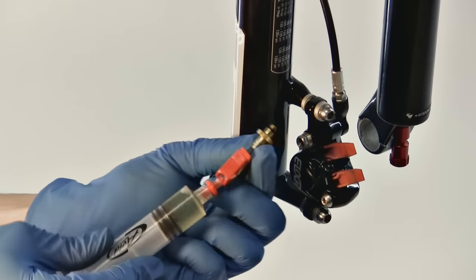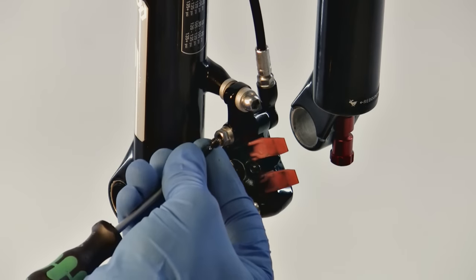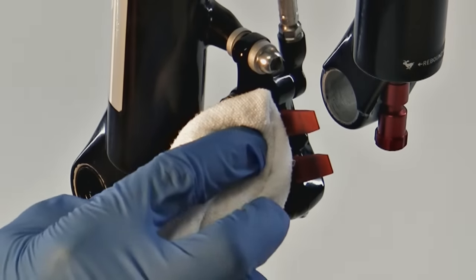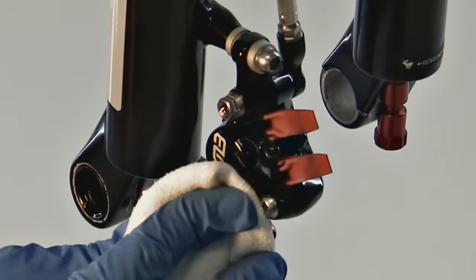Remove the syringe from the caliper and reinstall the bleed port screw. Use a lint free rag to immediately wipe off any excess fluid.